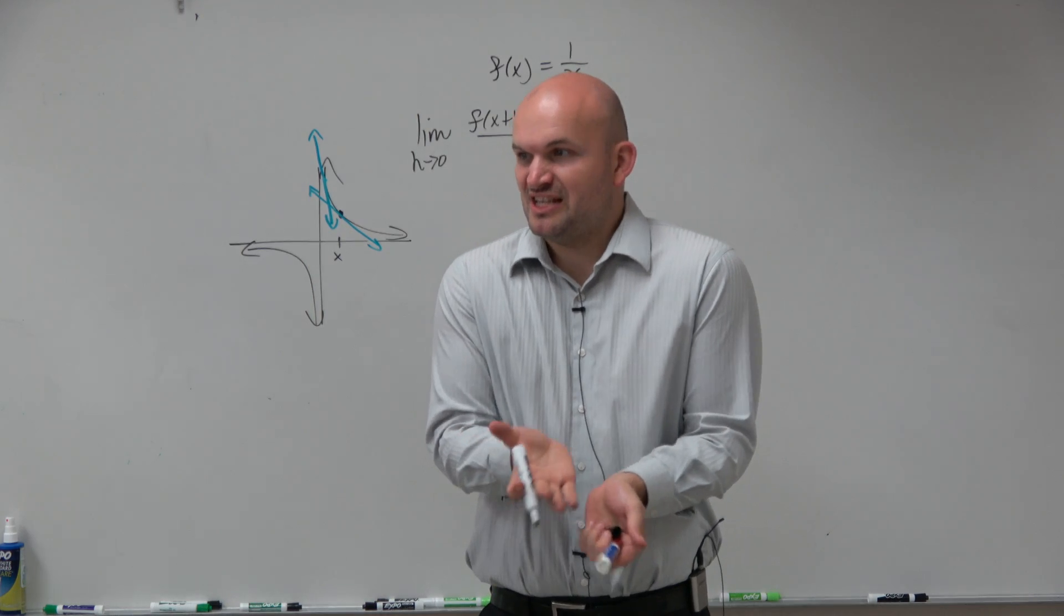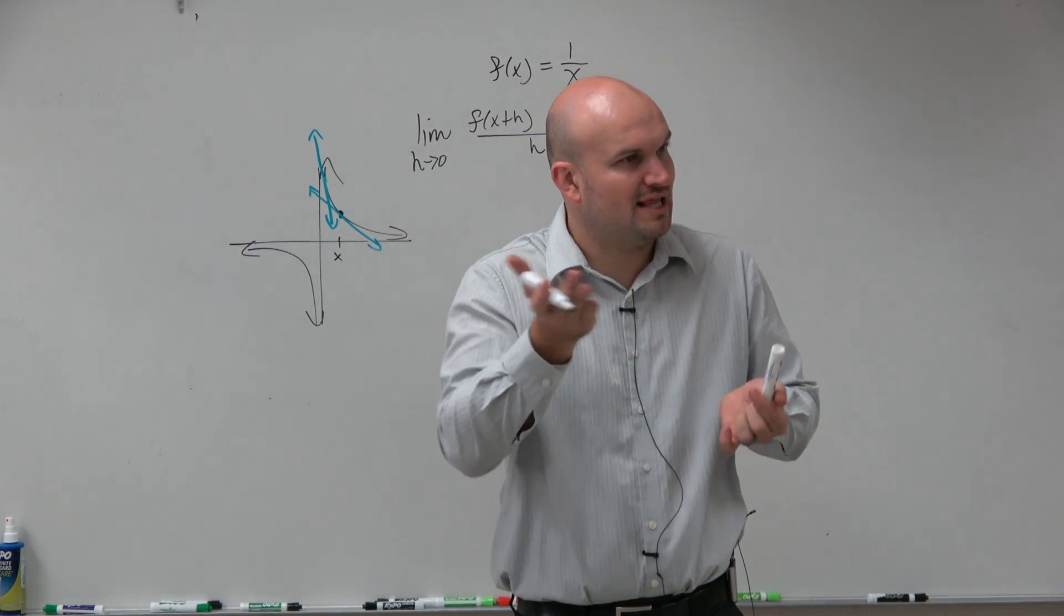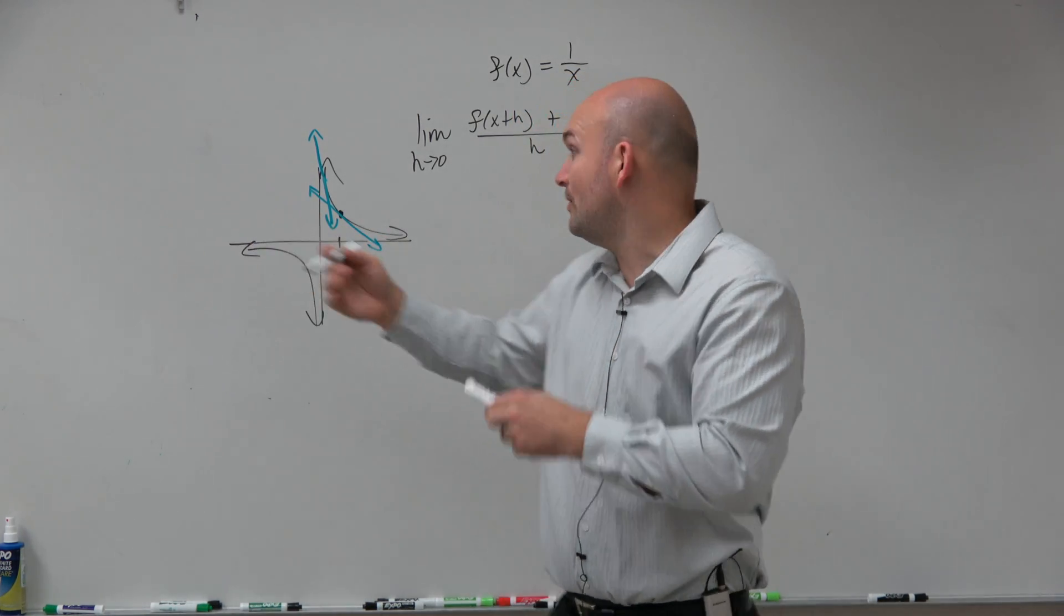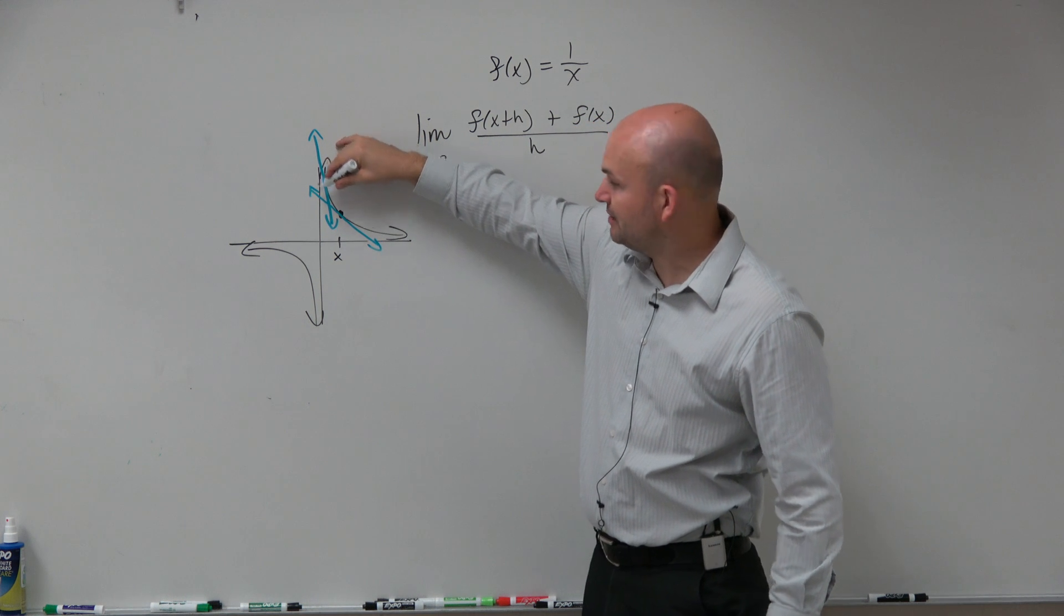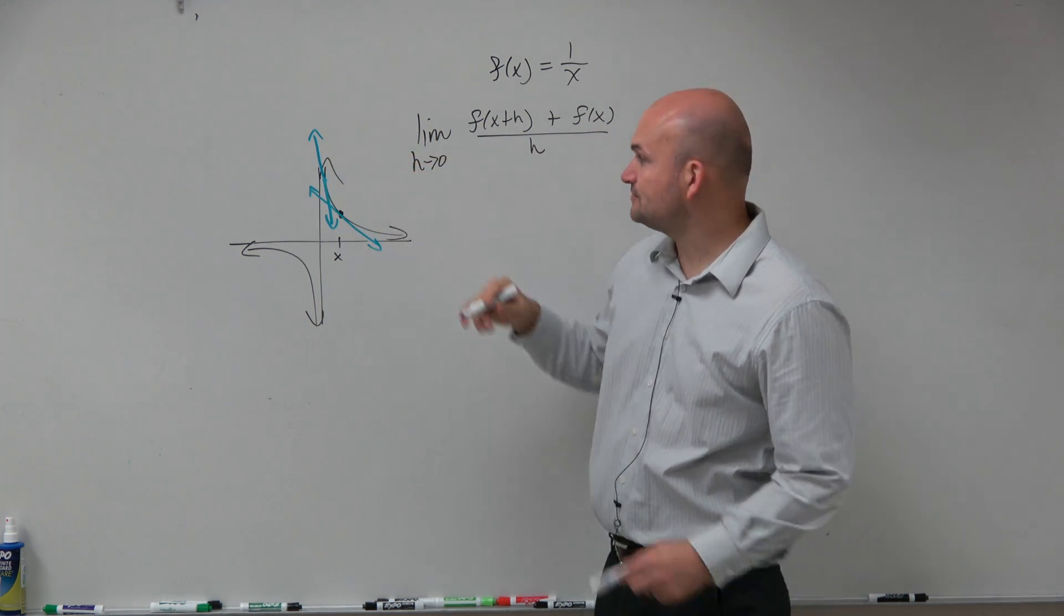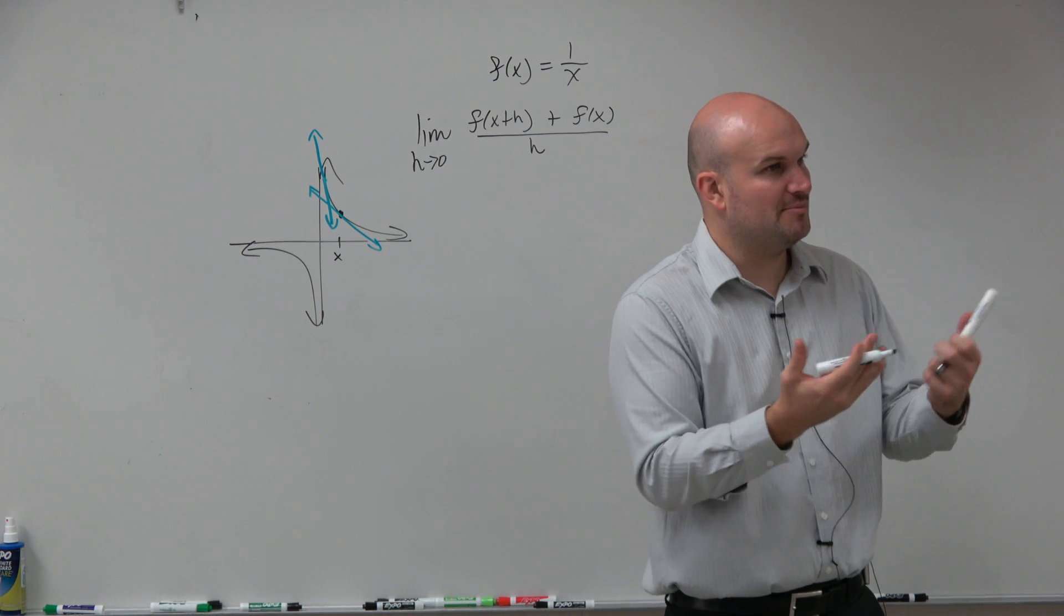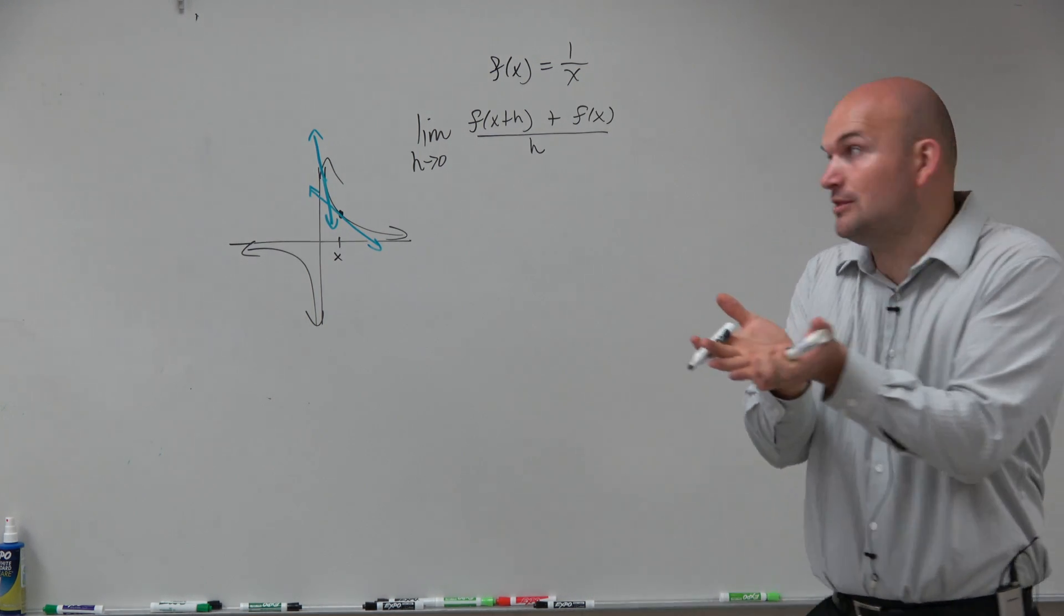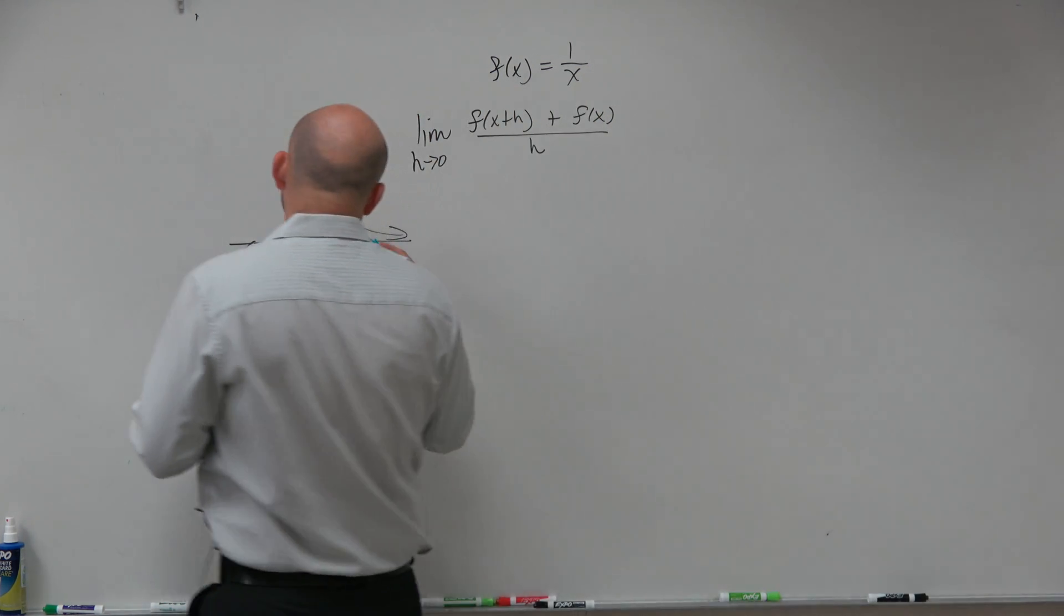So we want to be able to find that equation that provides us what the equation of the line should be at any given point. Because here it's really negative, here it's not so negative, correct? So we want to be able to find what is that equation for that local linearity.